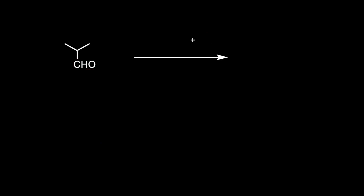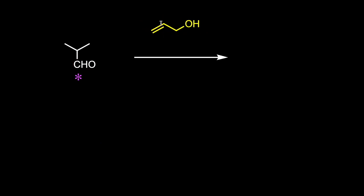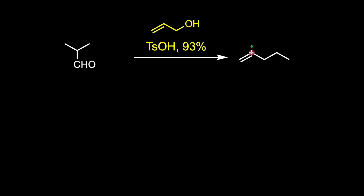The synthesis commenced by treatment of isobutyraldehyde with allyl alcohol in the presence of para-toluenesulfonic acid to give a gamma-delta unsaturated aldehyde.